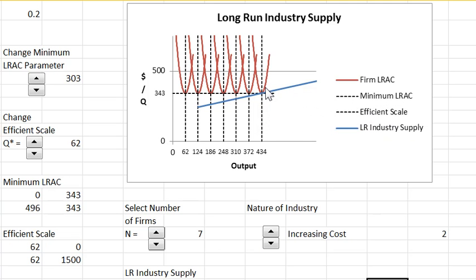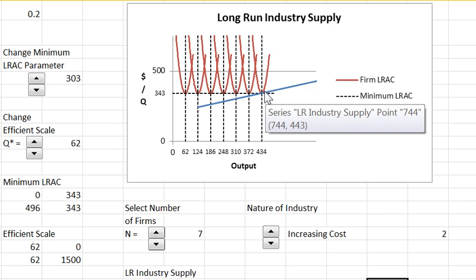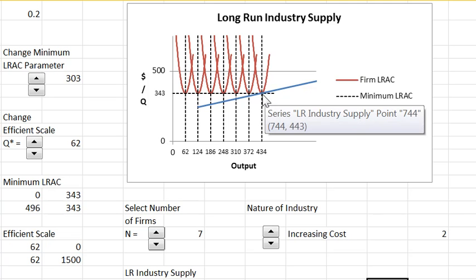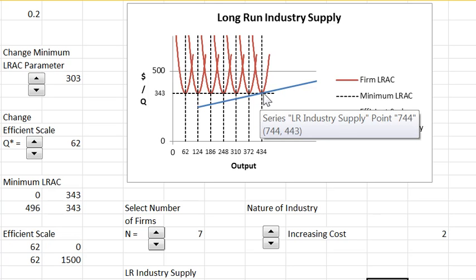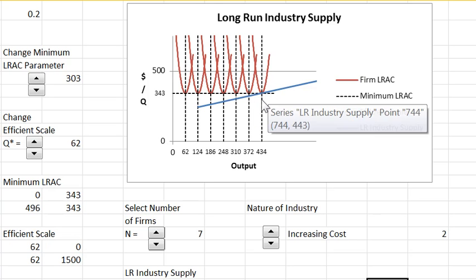And why is that happening? Because this industry must be a large demander of some inputs and as a consequence the input price is going up as the industry gets bigger. The input price going up is raising minimum average cost. It might actually affect the scale of firms as well. I'm not having it in this graph affect the scale, only the minimum average cost.